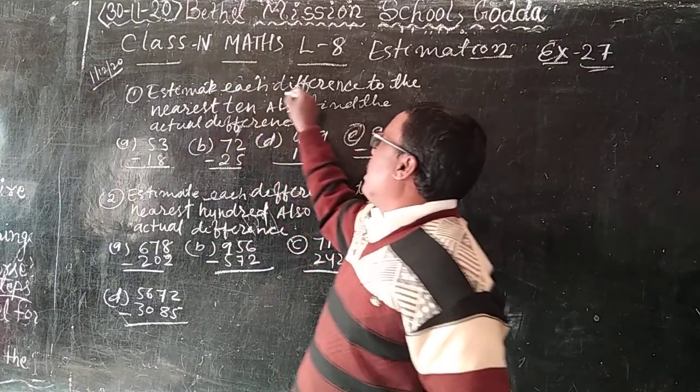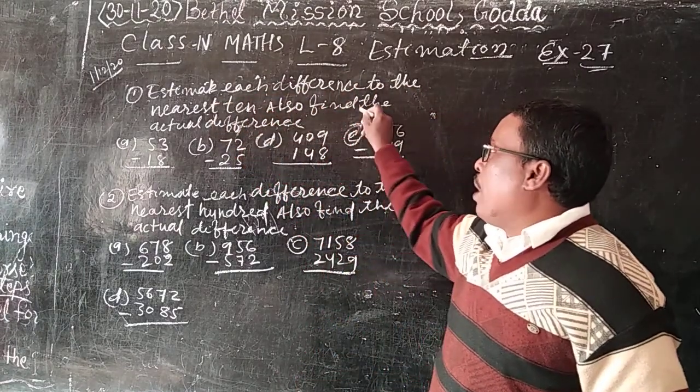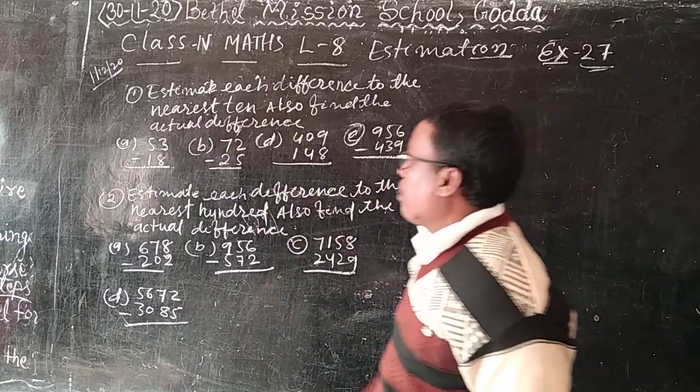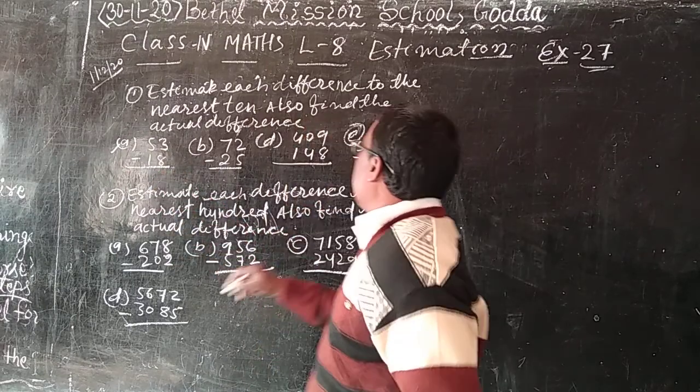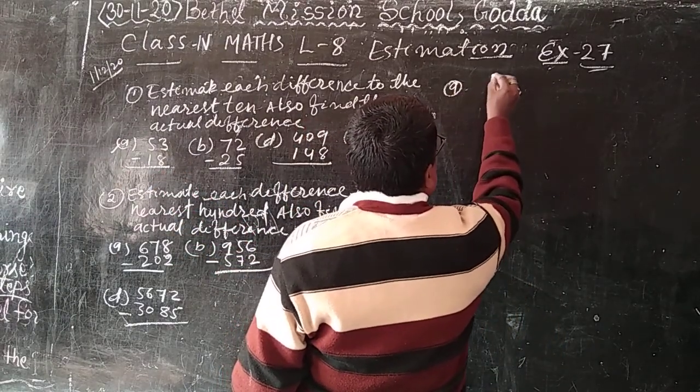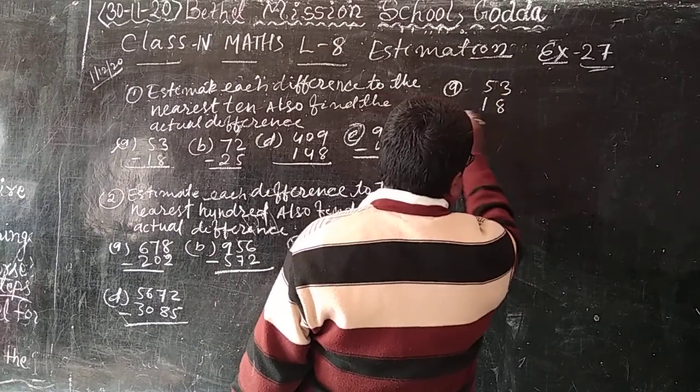Estimate each difference to the nearest ten. Also find the actual difference. First number A, 53 minus 18.